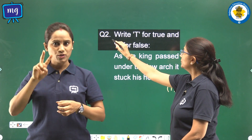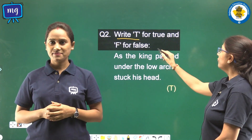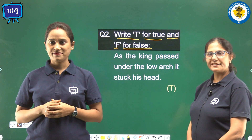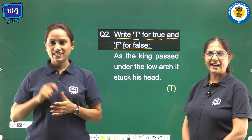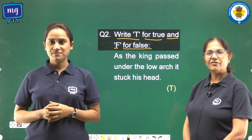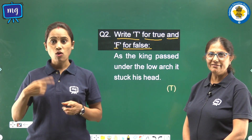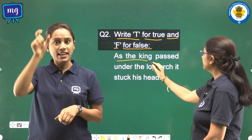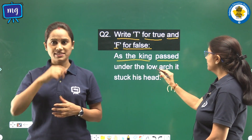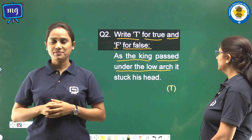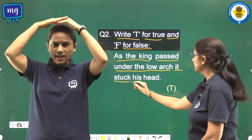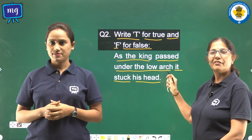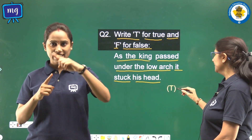Question number 2: write T for true and F for false. In this question you will write T for a correct sentence or F for a wrong sentence. As the king passed under the low arch, it struck his head — this is true, so we shall write T in the bracket.